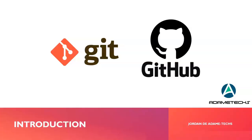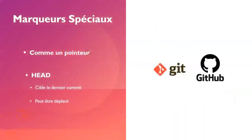In addition to tag branches and other labels for commits, git has special labels or pointers. A popular pointer is called HEAD, and normally it's the last commit of the current branch. This means that when we change branches, the location of HEAD moves to match the last commit location of that branch. Although this is generally true, it's also possible to manually move the location of HEAD elsewhere than the last commit. For now, HEAD points to the last commit of the current branch.